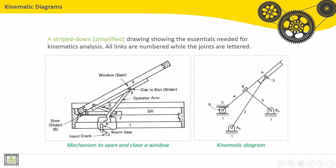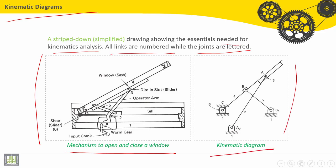Kinematic diagrams are stripped down, very simplified drawings showing the essentials needed for kinematic analysis. All links are numbered while the joints are lettered. We have an example here: a mechanism to open and close a window. Here we have the detailed drawing, and here we have the kinematic diagram.